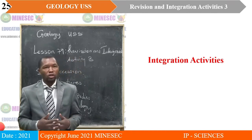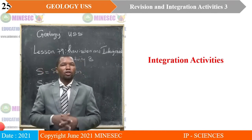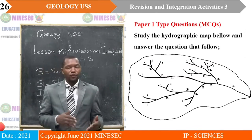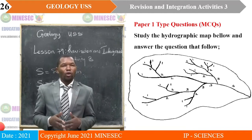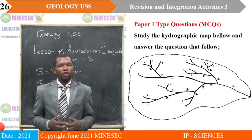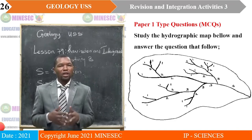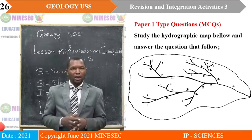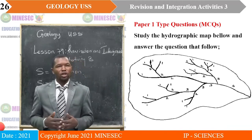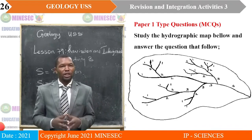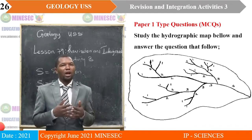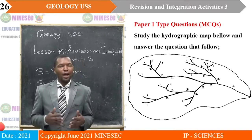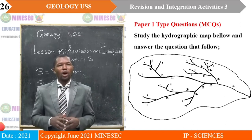Now we shall go into integration activities. In our integration activities, we have different types of questions — paper one type questions and paper three type questions — because map work is very essential for paper one and paper three, which is the practical paper. Photo interpretation is also essential for paper one and paper three. Each question will have four options with only one correct answer.